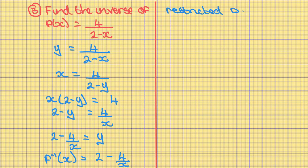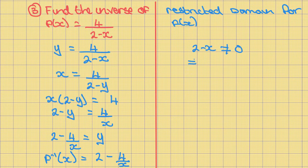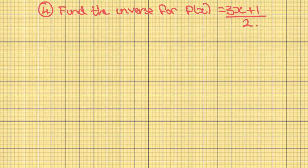In this example we have a restricted domain for f of x. Two minus x cannot equal zero, therefore x cannot equal two.